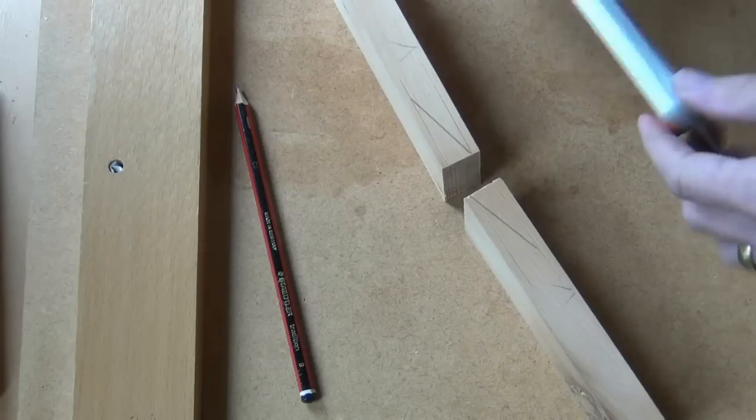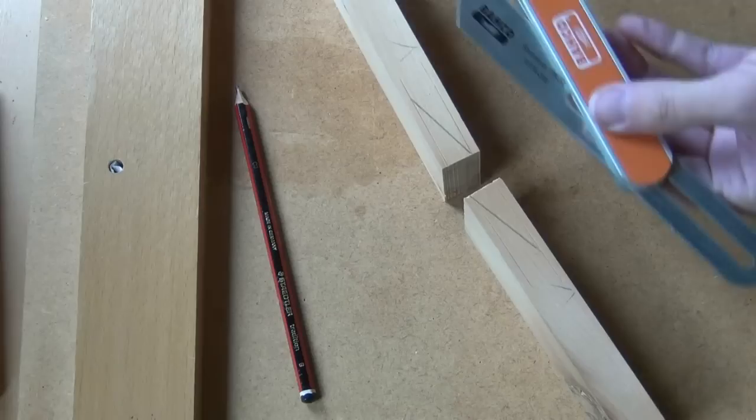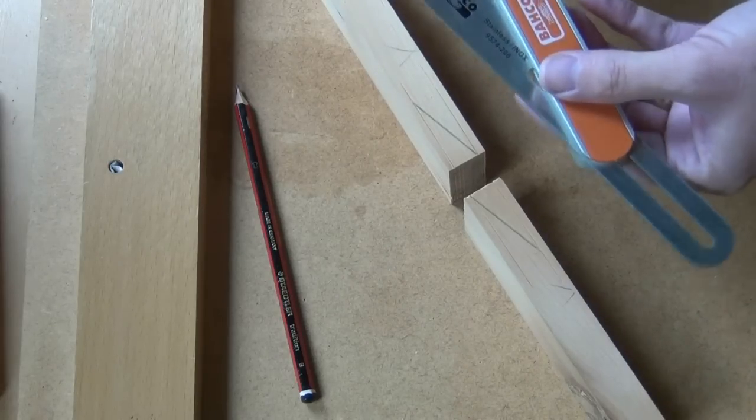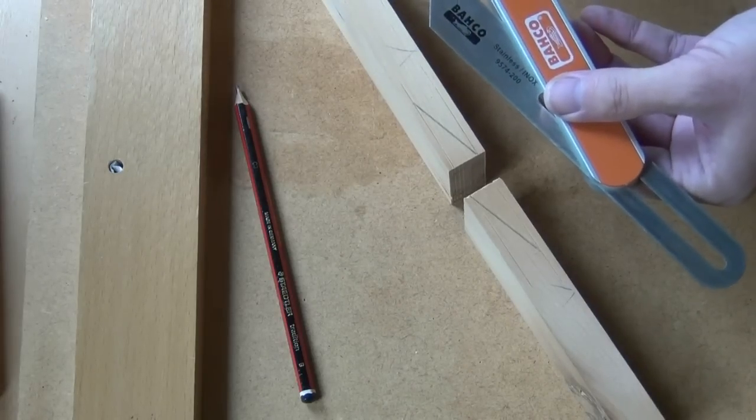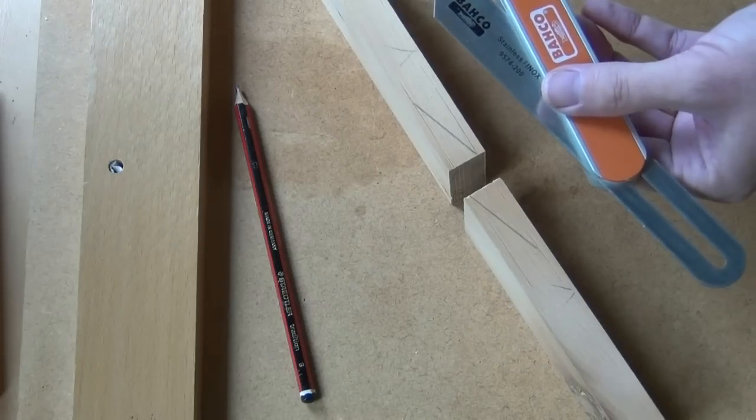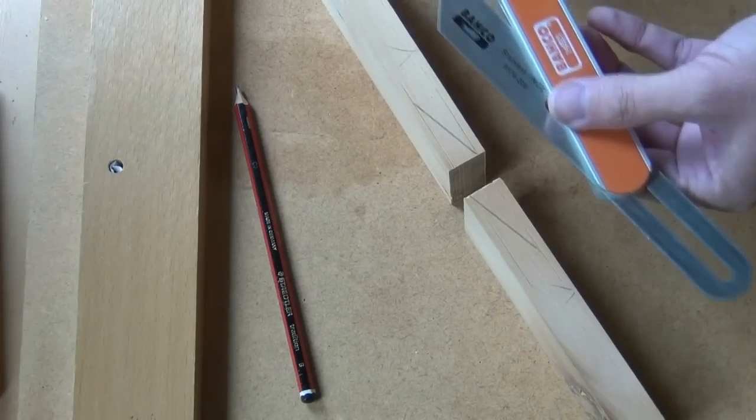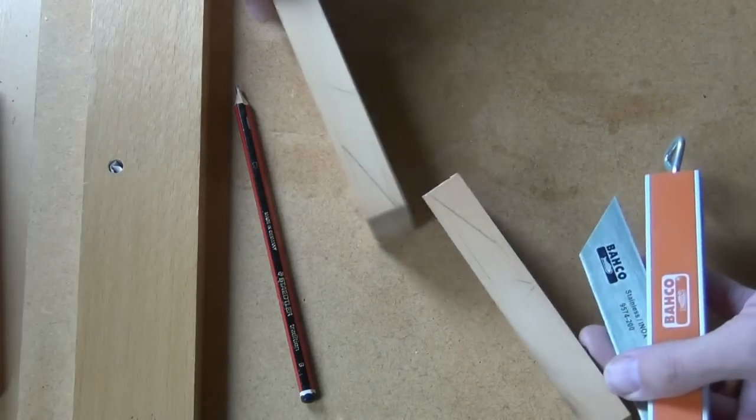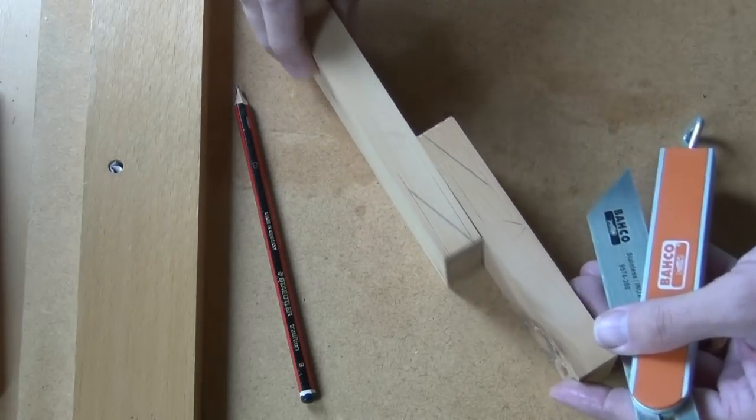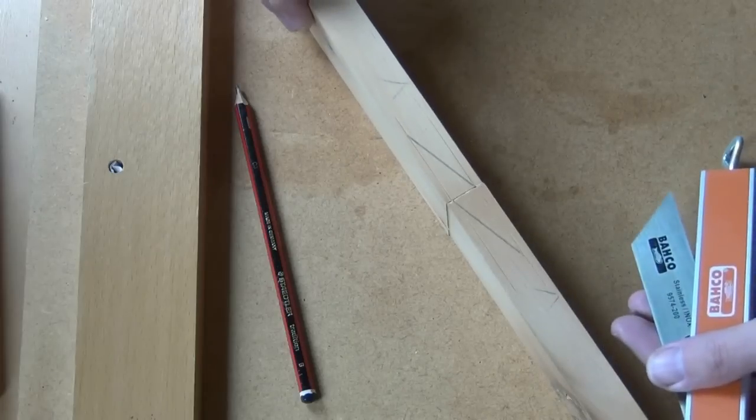Then taking my bevel gauge which I've set in this instance to a one-in-three slope. The shallower the slope the greater the glue surface area you have and the greater the bond will be, but obviously the greater the slope the more material you end up losing in the overlap. So just for this demonstration I'm doing one-in-three.